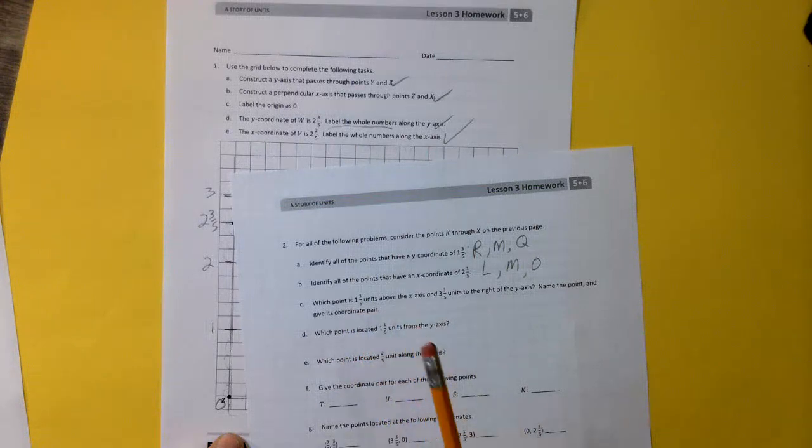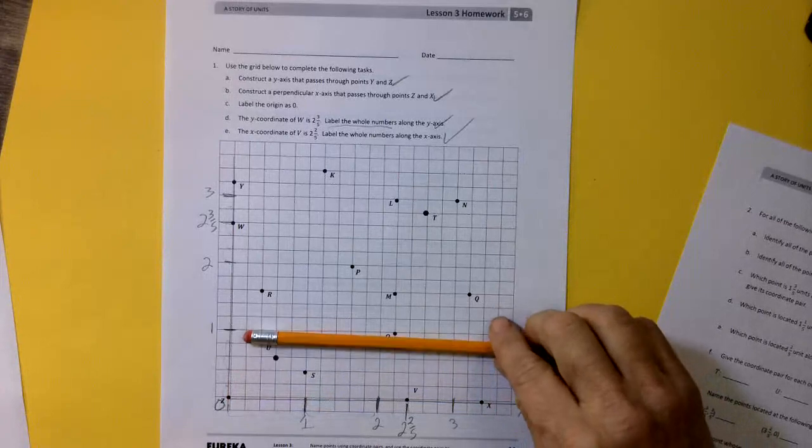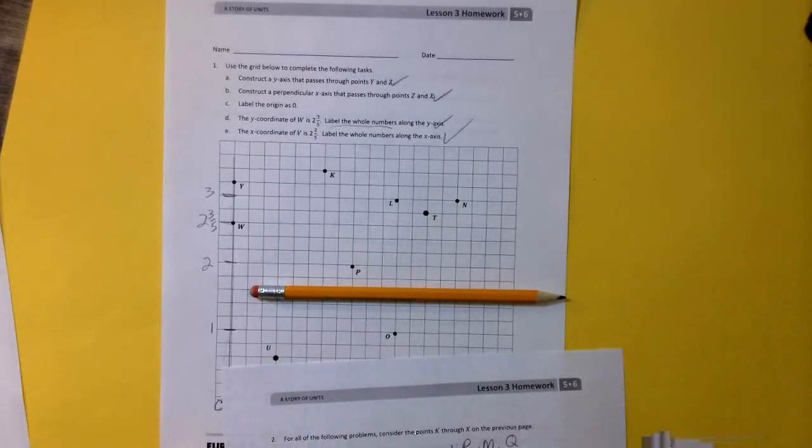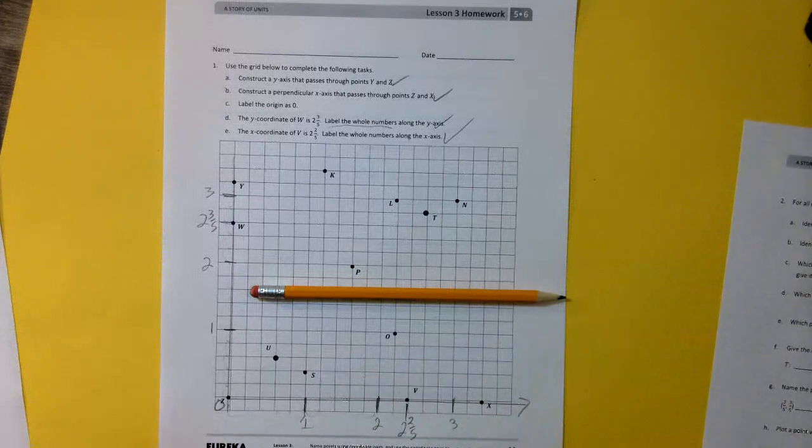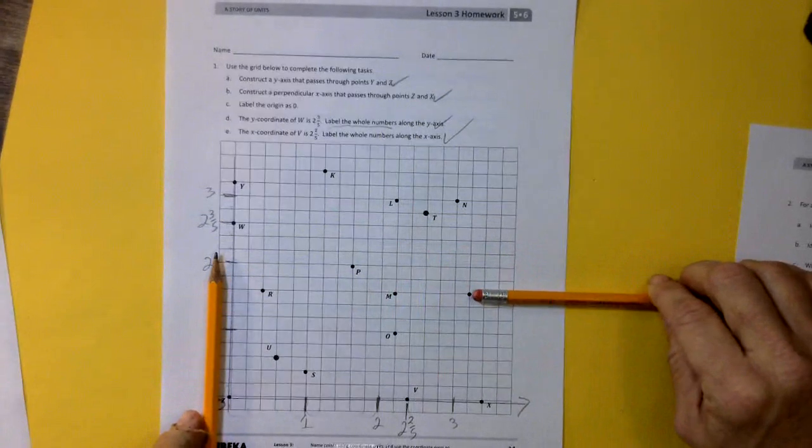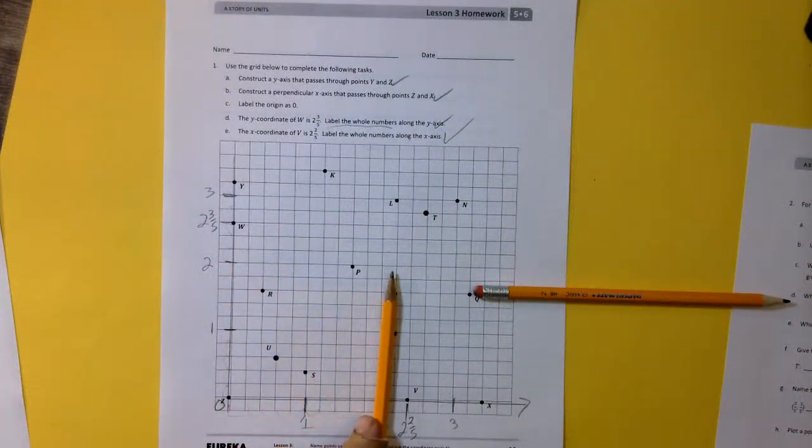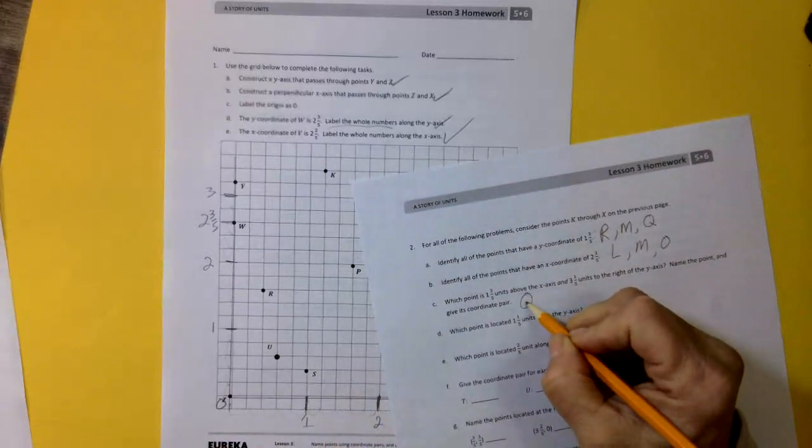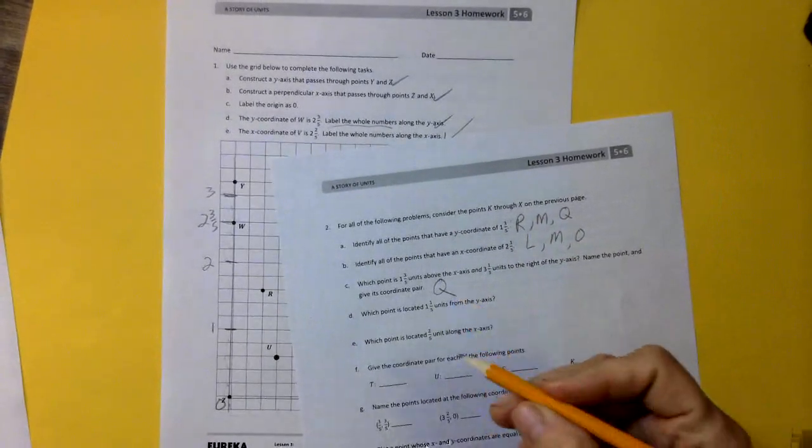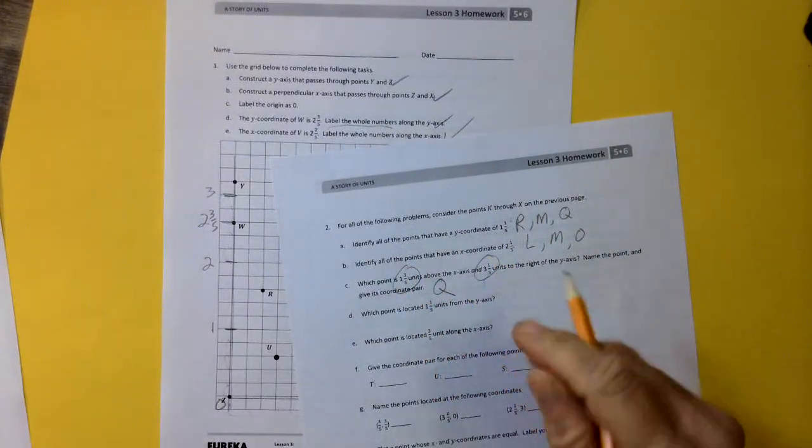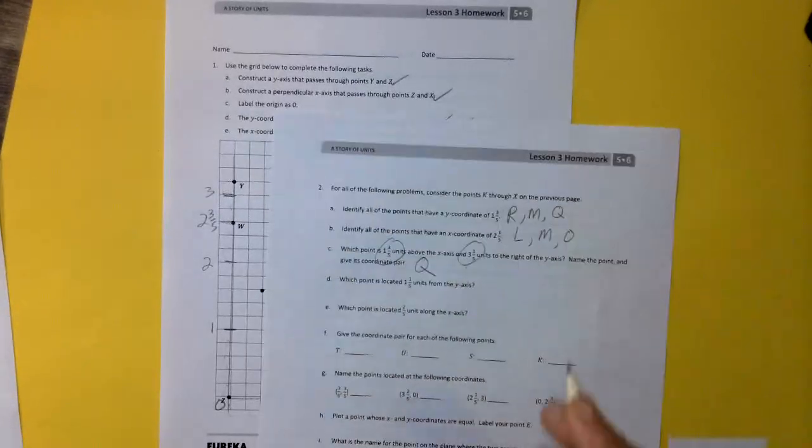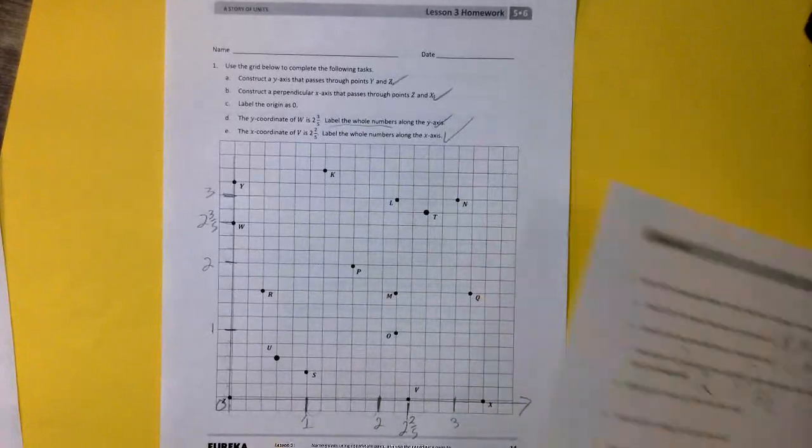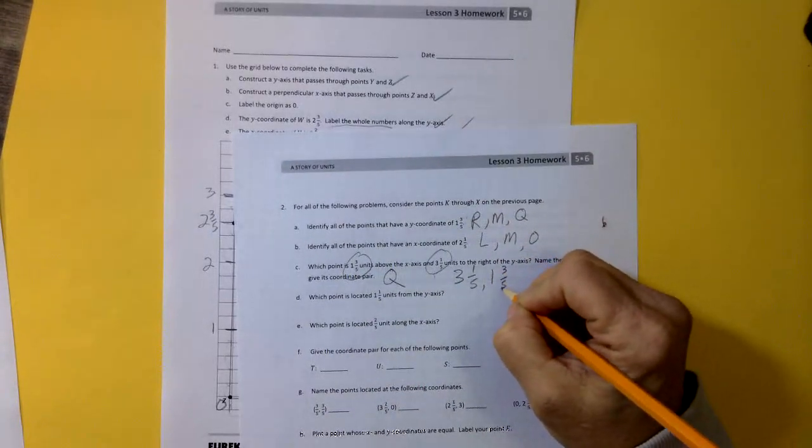All right, which point is 1 and 3 fifths above the x-axis? So 1 and 3 fifths, 1 and 1 fifth, 2 fifths, 3 fifths. So this line. And then the second part of that is 3 and 1 fifths to the right of the x-axis. So we know we're here, and we want to go 3, 1, 2, 3, and 1 fifth. So there we are, 3 and 1 fifth. That's going to be Q. Right? It says name the point and give the coordinates. Well, we have the coordinates. We know we went over, right? We went over 3 and 1 fifths. We went over, and then we went up 1 and 3 fifths. Right?